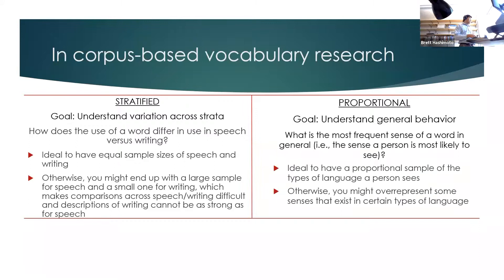On the other hand, if our goal is to understand general behavior, or what is the most frequent sense of the word in general — the sense of a word that a person is most likely to see or to use — then it's ideal to have a proportional sample. Otherwise, we might over-represent some senses that only exist in certain types of language.